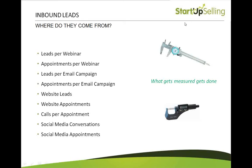So webinars, e-marketing, website traffic — we've talked about all marketing and lead gen related topics so far. Now we're going to transition into more of a sales-related, still lead gen, but sales-related KPI family, where we look at our inbound leads and where they're coming from. We keep using the phrase 'what's measured gets done, what's measured gets improved.' We're putting all these efforts into lead gen, and we want to make sure we're getting enough leads and appointments from each campaign to make it worth our while.